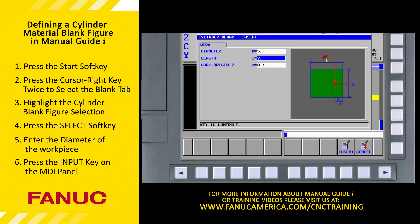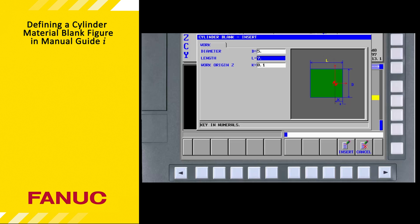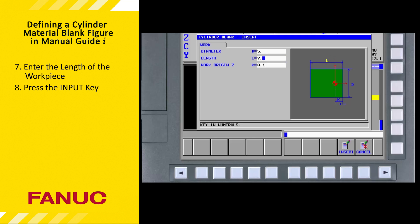The second parameter is the length of the workpiece. The length of the bar stock we will use is roughly 7 inches, so we enter 7.0 and press the Input key.